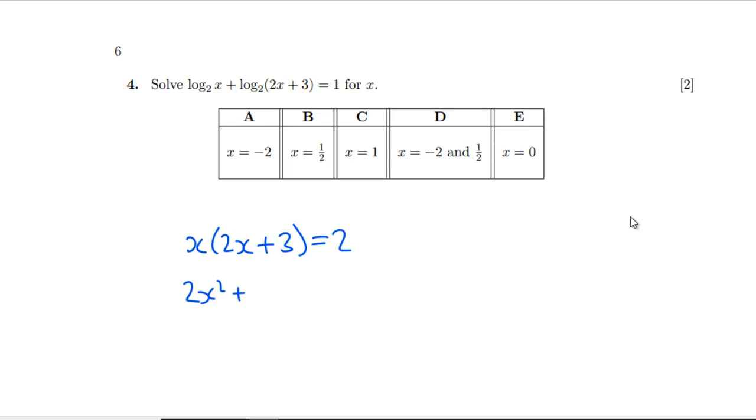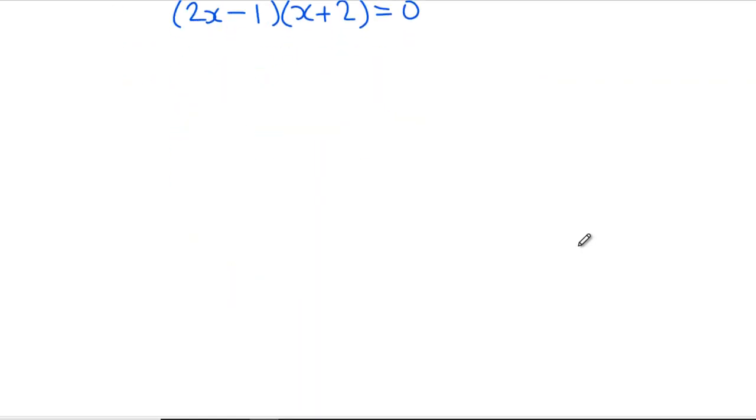2x squared plus 3x minus 2 equals 0. This looks like it's got B written all over it, but let's factorize: 2x minus 1 times x plus 2 equals 0. X can't be minus 2 because we can't have a negative going in there, so x is going to have to be a half, which is B. Yeah, it looked like as soon as that appeared with that 2 there, it kind of had a look about it.